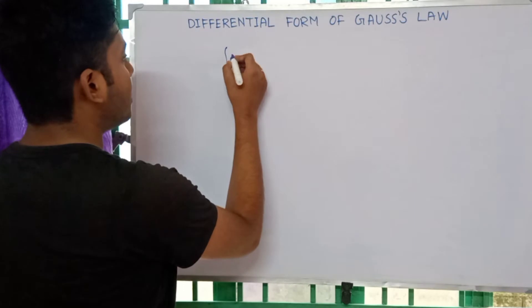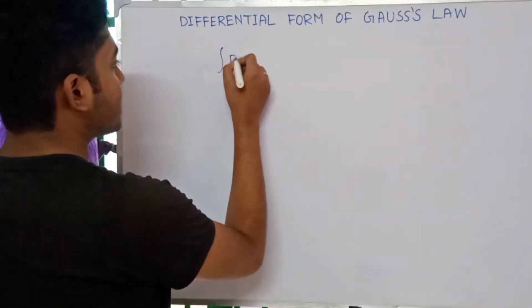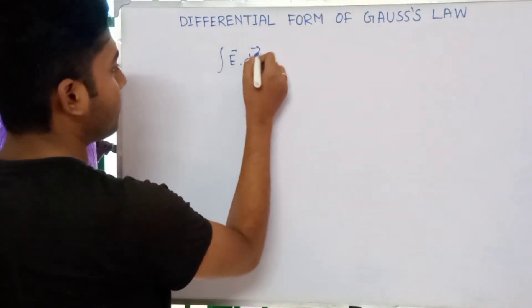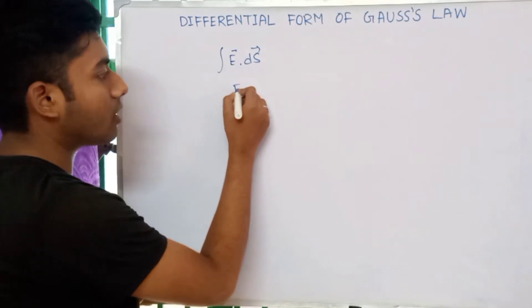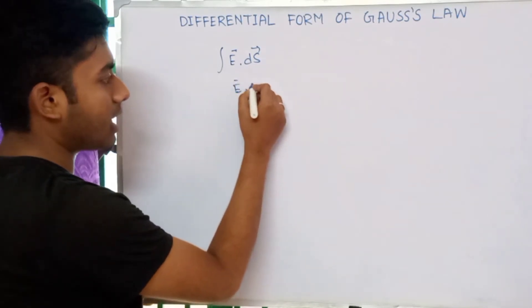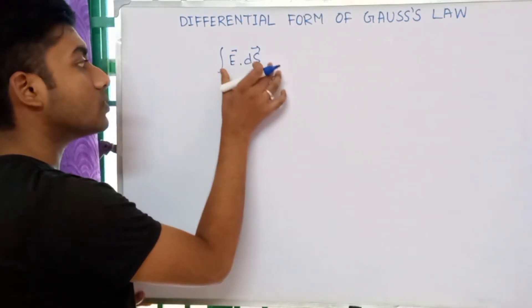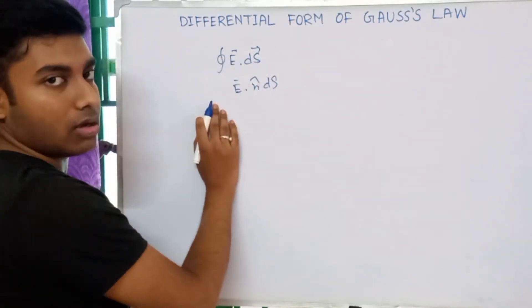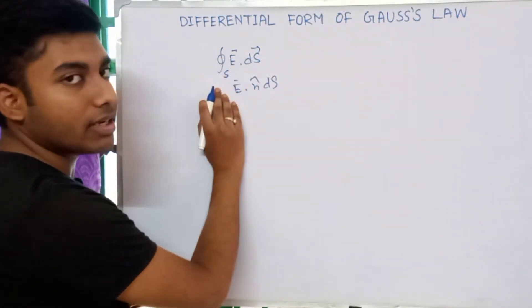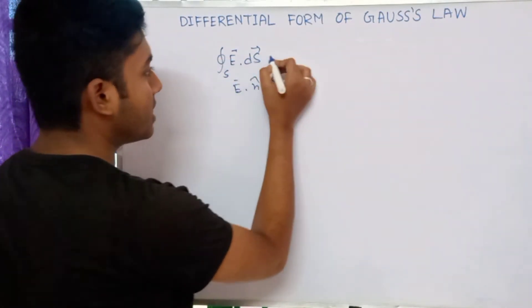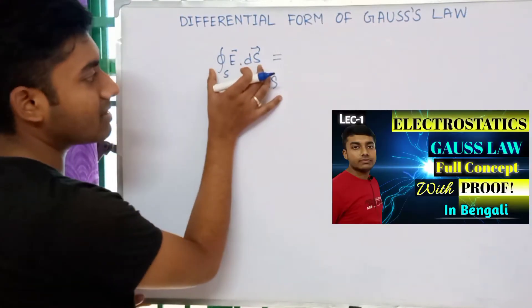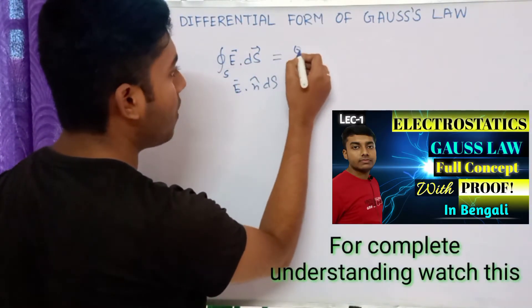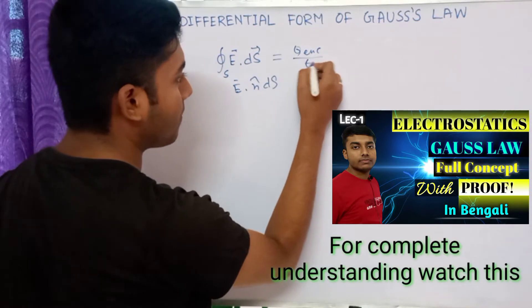We know that Gauss's Law states: the surface integral of E dot dS, that means E dot n-cap into dS — the surface integral E dot dS is equal to the electric flux, which equals Q enclosed divided by epsilon naught.